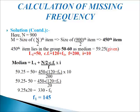CF is the cumulative frequency preceding that particular class interval, so it will be 120 plus F1. The frequency of class interval 50 to 60 is 200. I, the class width, is 10. We now write the median formula: L1 plus (N by 2 minus CF) divided by F, multiplied by I. We put in the values, writing 59.25 in place of median as it is already given.